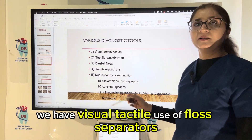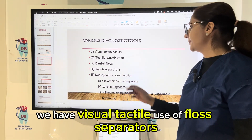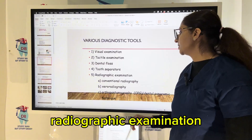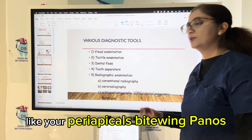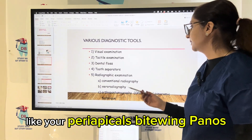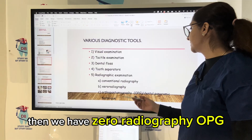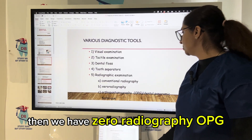We have visual, tactile, use of floss, separators, and radiographic examination — like conventional radiography including periapicals, bite wing, and panels. Then we have xeroradiography and OPG.